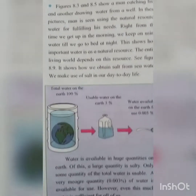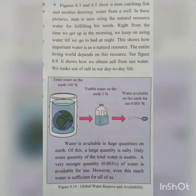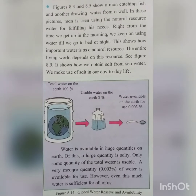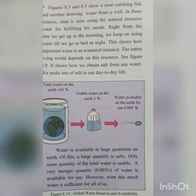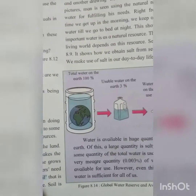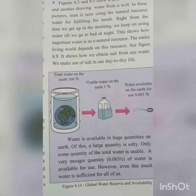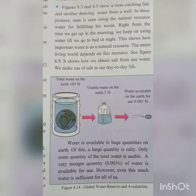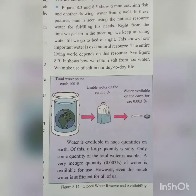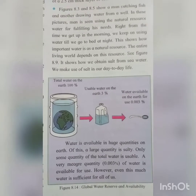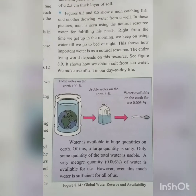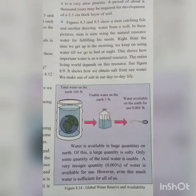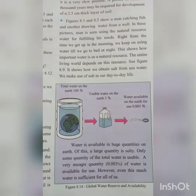Figure 8.14 shows global water reserve and availability. Total water on earth is 100%. Usable fresh water is 3%, and water actually available for use is only 0.003%. Of the total water, a large quantity is salty. Only 0.003% of water is available for use — for cooking, bathing, and different purposes. However, even this much water is sufficient for all of us.